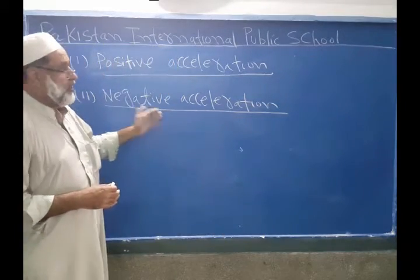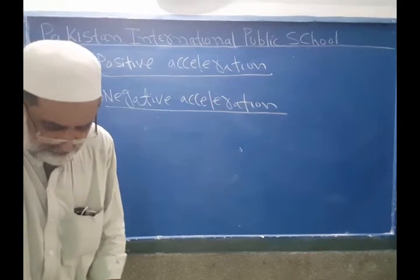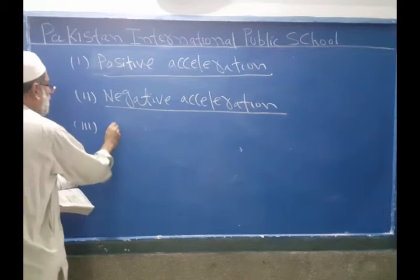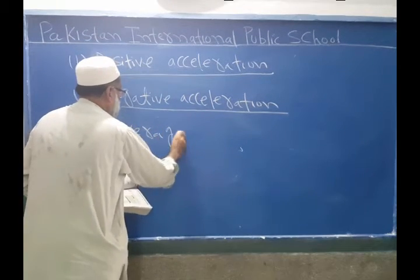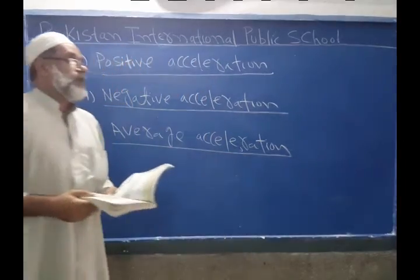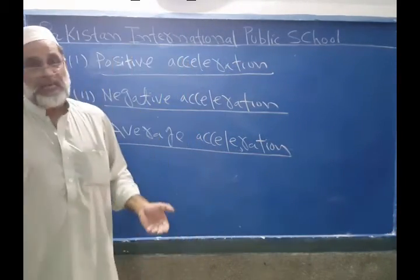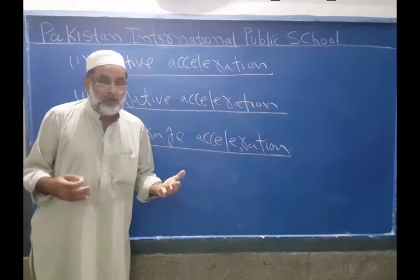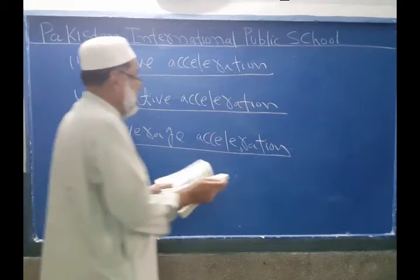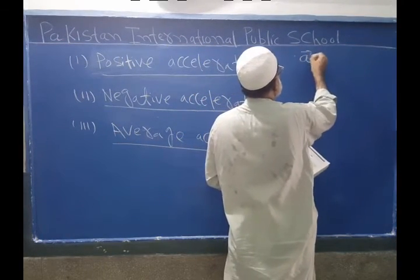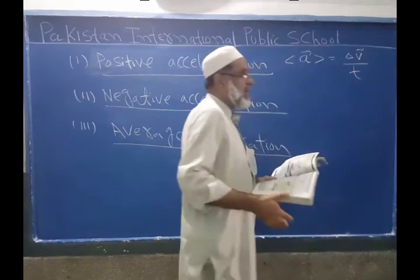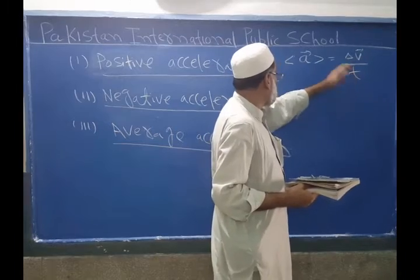Negative acceleration is also known as deceleration or retardation. These terms are also used for negative acceleration. Third type is average acceleration. The total change in velocity divided by the total time is known as average acceleration. Average acceleration is denoted by A in triangular brackets, equal to delta v divided by T.